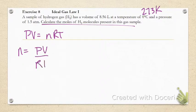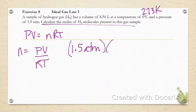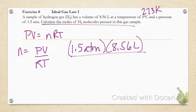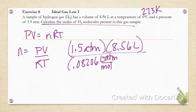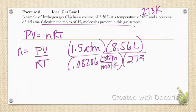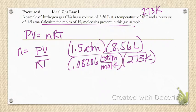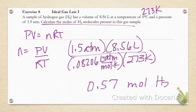Plug everything in: 1.5 atmosphere times 8.56 liters divided by 0.08206—sometimes you'll see people use 0.0821, I'm guilty of doing that and honestly it doesn't make a huge difference in calculations. Plug and chug, put it in your calculator and you should get 0.57 moles of H2.